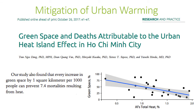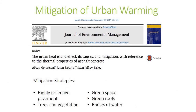So how can we mitigate the urban heat island effect? One article illustrates how green space can reduce heat stress — specifically, the authors found that every increase in green space by one square kilometer per 1,000 people can prevent 7.4 mortalities related to heat. Another article provides examples of how we can add nature amenities to our cities, including highly reflective pavement, trees and vegetation, green space, green roofs, and bodies of water.